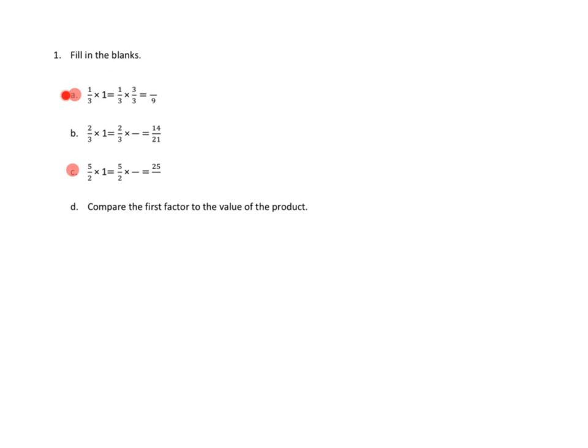Let's just take a look at 1a. 1a has been partially done for us. 1 third times 1. So what do they do? 1 third times 3 over 3, 3 thirds. Oh, I see. So that's like another way that you could describe 1. 1 is the same as 3 thirds, right? They're equivalent.